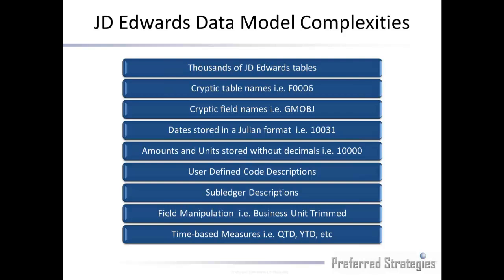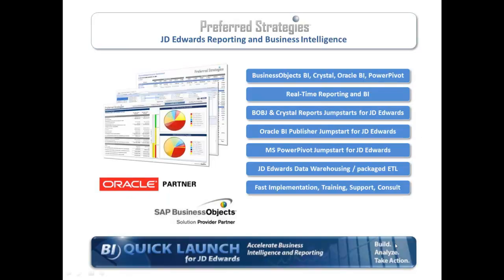It's not just the data model — there are a lot of different elements that make it difficult to get information out of any system, let alone J.D. Edwards. Our company focuses on Business Objects BI and Crystal Reports, Oracle BI, BI Publisher, and PowerPivot. We do real-time reporting, referred to as Direct Connect, where we take our pre-built content and connect it directly against transactional J.D. Edwards data, so if you post a journal entry and want immediate results, that can be reflected in reports and ad hoc analysis. We've got jumpstarts for Business Objects and Crystal, Oracle BI Publisher, and Microsoft PowerPivot. We also support replicated data stores, data warehouses, and Star Schema, with pre-built content for J.D. Edwards.